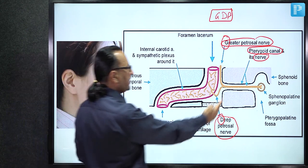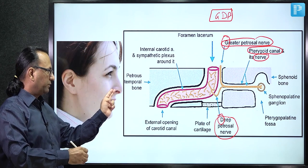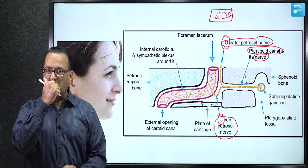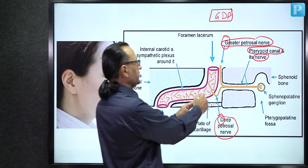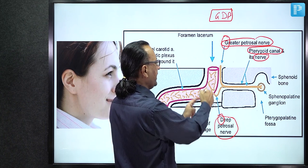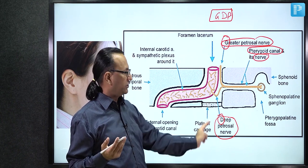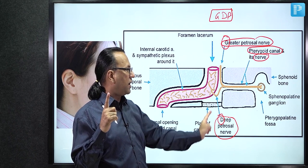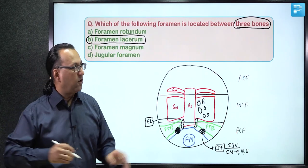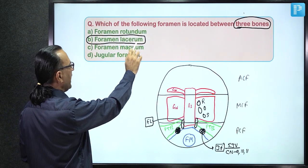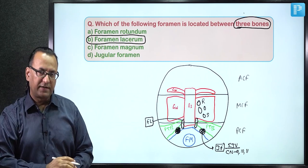Two more structures pass through foramen lacerum: emissary veins (connecting the pterygoid venous plexus extracranially with the cavernous sinus intracranially), and a meningeal branch of the ascending pharyngeal artery. Total: seven contents of foramen lacerum. The answer remains foramen lacerum — bounded by three bones. Answer: Choice B.